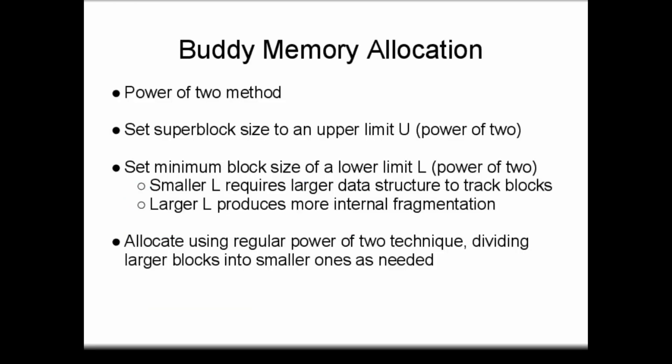Another improvement to memory management is to utilize a buddy system in the power of two strategy. In this allocation system, two limits are chosen to be powers of two: the upper limit U and the lower limit L. The super blocks are blocks of size U, and these blocks can be subdivided into blocks as small as L bytes. A smaller size for L produces less internal fragmentation, since the block size more closely matches the smallest request sizes from processes. However, a smaller L means more total blocks to track, which increases the size of the binary tree, using more RAM and increasing search time. A larger L reduces search time and makes the tree smaller, but the amount of internal fragmentation increases.